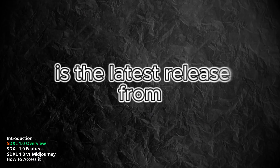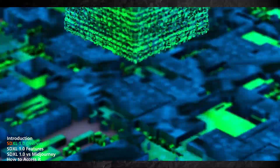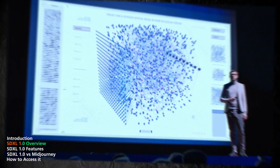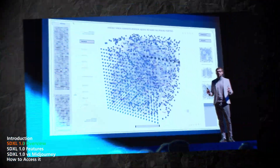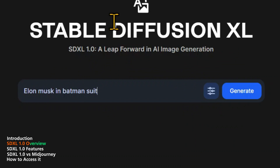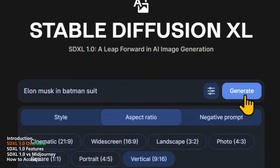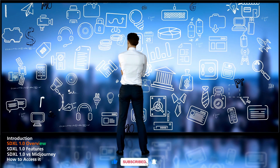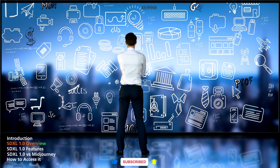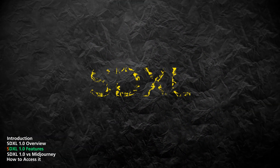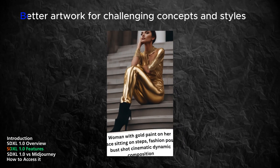SDXL is the latest release from Stability AI, a company that specializes in developing cutting-edge AI models for various applications. SDXL stands for Stability Deep Extreme Learning, and it's a model that can generate high-quality images from any text prompt, in any style, and in native 1024x1024 resolution. SDXL is a result of months of research and testing, based on feedback and preferences of thousands of users on Discord and other platforms.